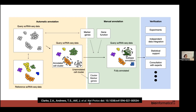For cross-species annotation, it depends on the resolution. For broad categories like immune cells versus endothelial cells you can absolutely use mouse data, but for specific types of T cells, probably not. You can also run multiple different reference datasets separately rather than combining them, and see if they agree with each other.